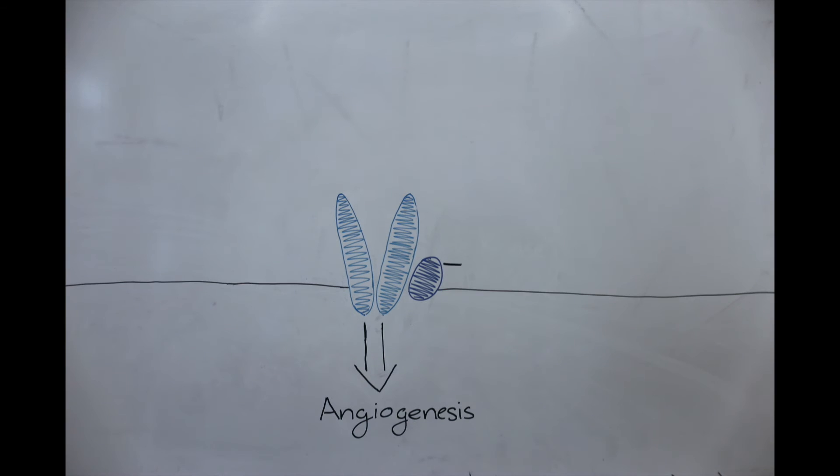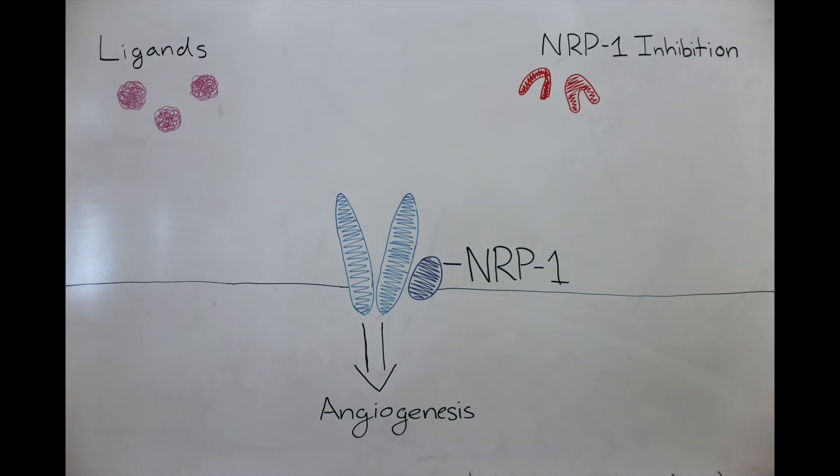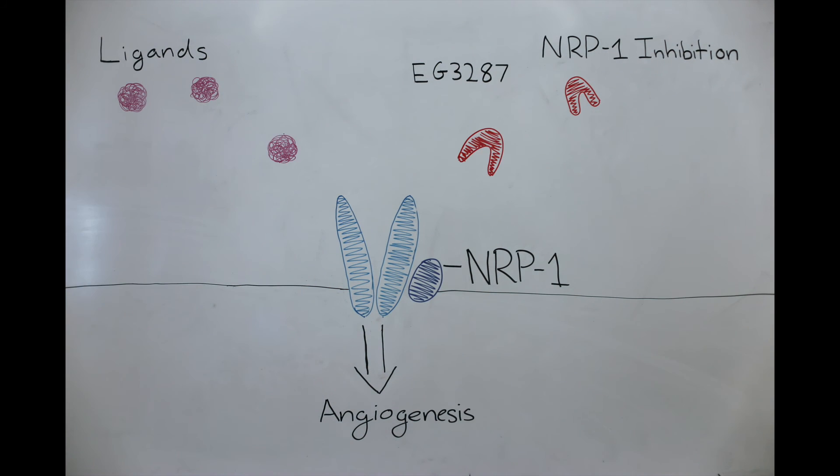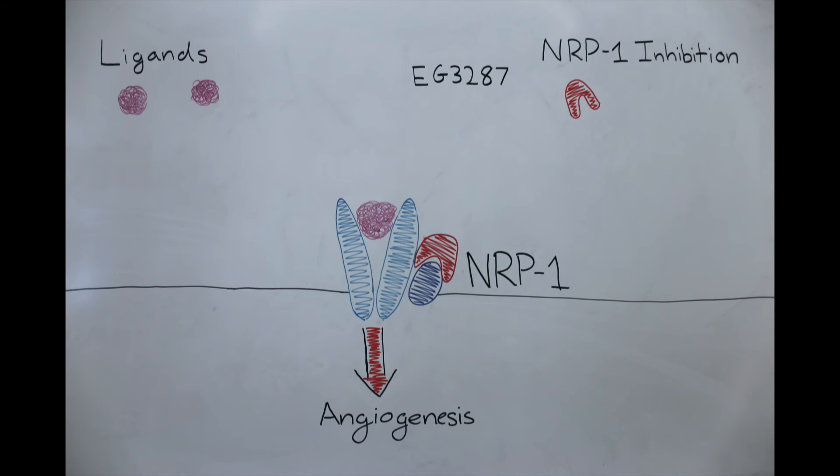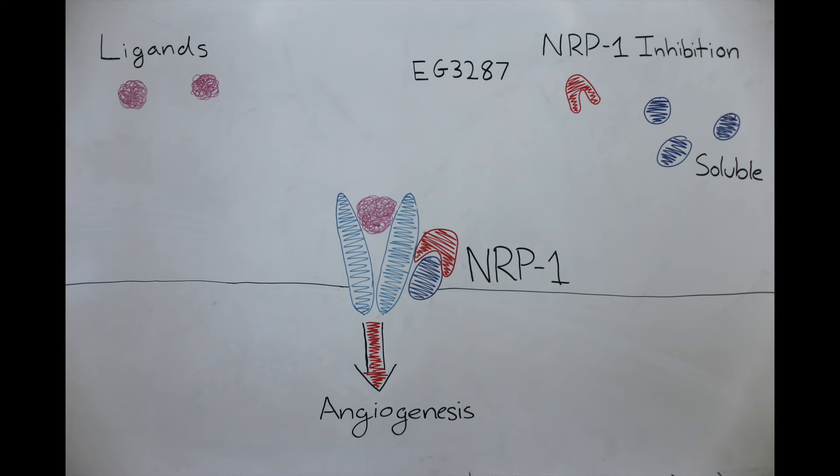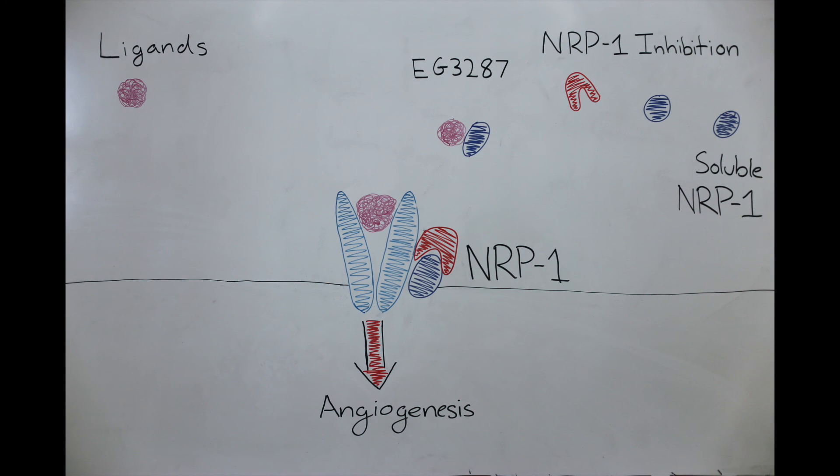One new proposed method of VEGF-A pathway inhibition is to target the neuropilin-1 co-receptor, which doesn't launch the signaling cascade itself, but instead helps ligands bind to the receptors. There is currently one drug called EG-3287 that blocks NRP-1 activity, and it has been shown to prevent angiogenesis and promote apoptosis in cancerous cells. Scientists have also tested soluble NRP-1, which attracts the VEGF ligand away from the receptor and prevents angiogenesis. Targeting the NRP-1 co-receptor, the ligands don't start the signaling cascade that causes angiogenesis, while unintended consequences are kept to a minimum.